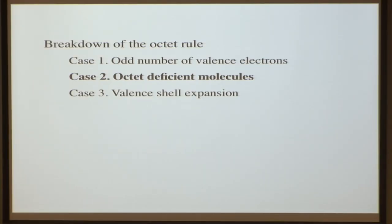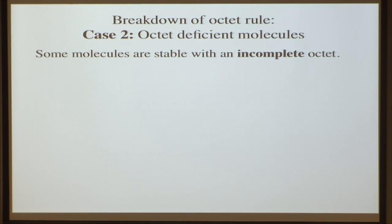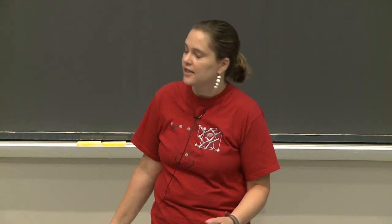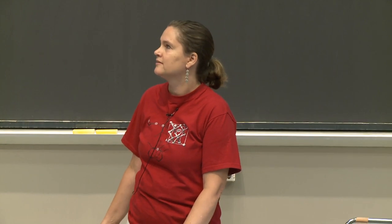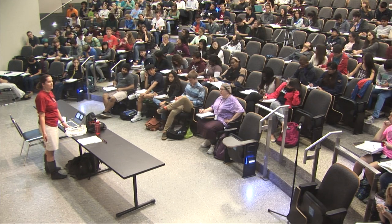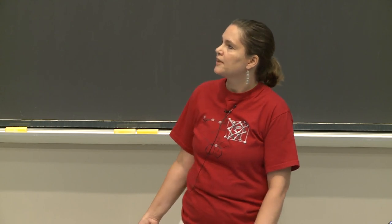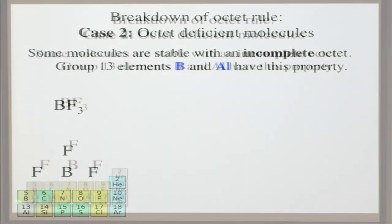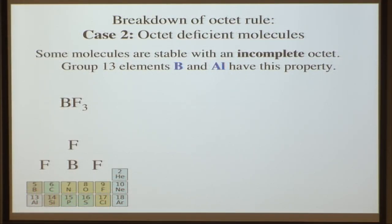We have more problems to address: octet-deficient molecules — incomplete octet. There are only two you need to know: boron and aluminum. They're right there together in the periodic table. Let's look at boron trifluoride, BF3. We put boron in the middle and three fluorines around it — fluorine is always terminal. It does not want to be anywhere else.